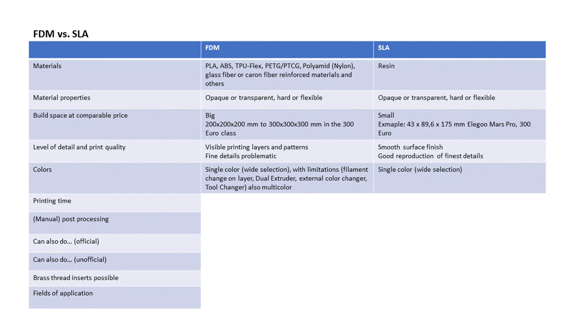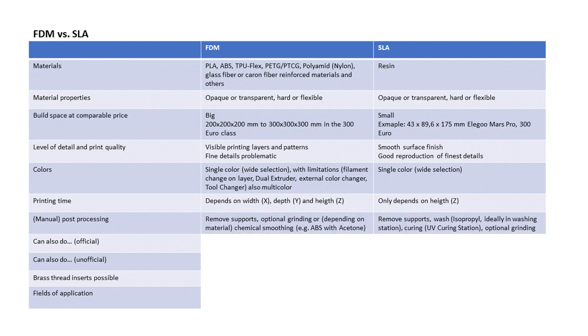Basically all 3D prints are only one color. However, manually or with additional hardware also automated, you can change colors during an FDM print. For SLA this is not possible. SLA print time only depends on the height. For FDM it also depends on breadth and width. With both printing technologies you need to remove the support structures.